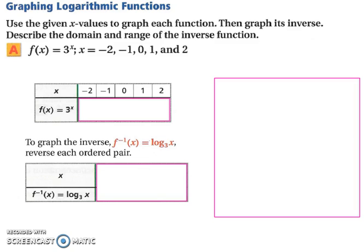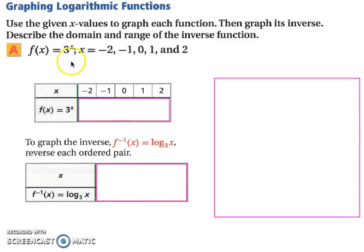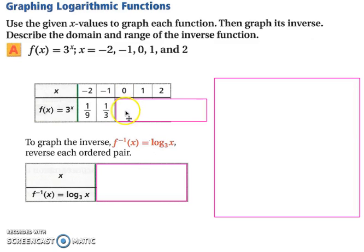Now let's look at graphing logarithmic functions. We have f(x) equals 3 to the x, using x values of negative 2, negative 1, 0, 1, and 2. When we substitute in each value: negative 2 gives 1/9, negative 1 gives 1/3, 0 gives 1, 1 gives 3, and 2 gives 9.